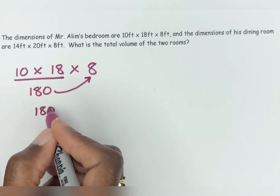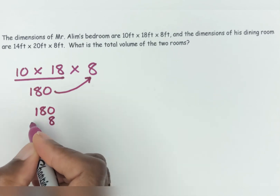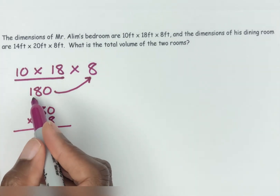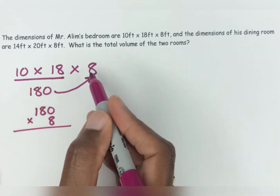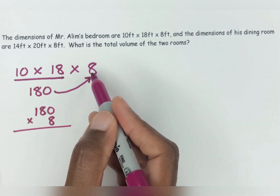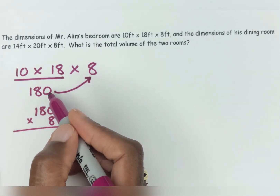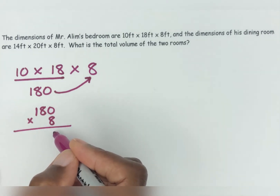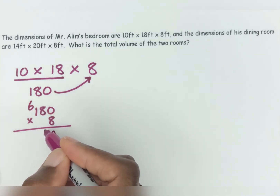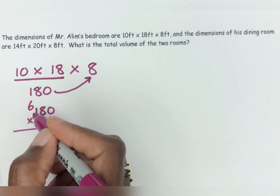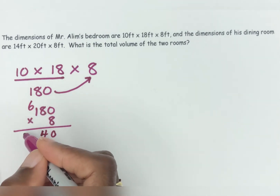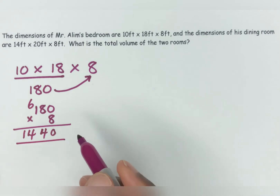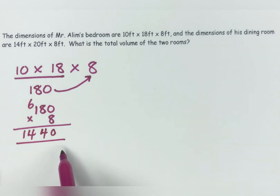Let me just show you: 180 times 8. You would do 18 times 8 — if you know your times tables, just tag a zero on it. Working through it: 8 times 0 is 0, 8 times 8 is 64, 8 times 1 is 8 plus 6 is 14. So that gives us 1,440.